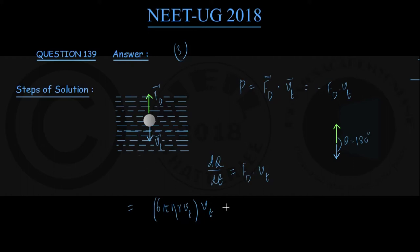So the rate of heat production can be written as 6πηR into Vt squared. This is my equation number one. What we have done so far can be taken to be step one of the solution.